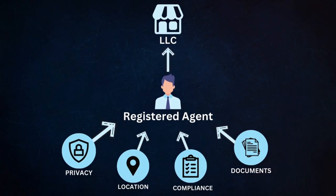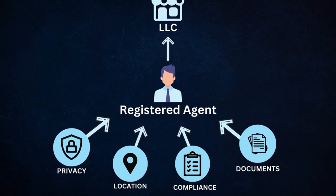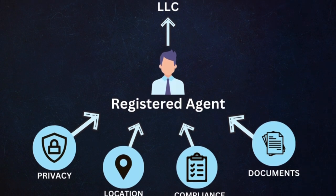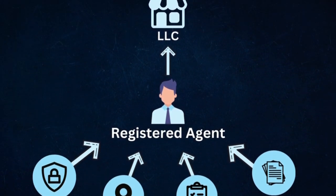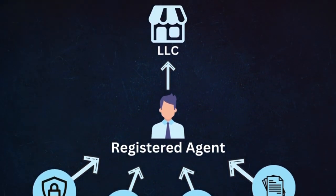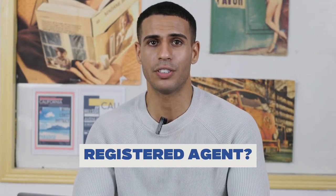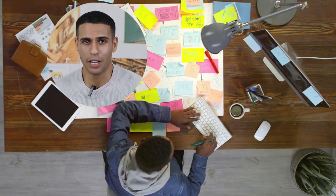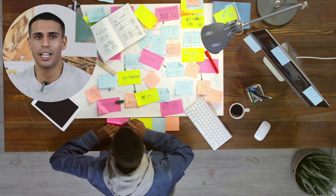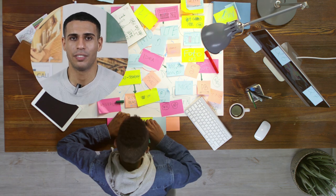So now that you have chosen your name, we can move on to step number two: appointing a registered agent. A registered agent is a person or entity that you need to appoint to handle necessary government, tax, and legal correspondence on behalf of your LLC. You can become your own LLC's registered agent, although this is not recommended because you need to handle complicated legal documents and requirements.